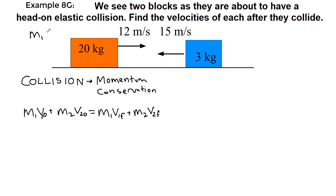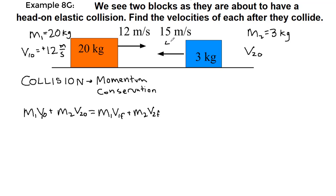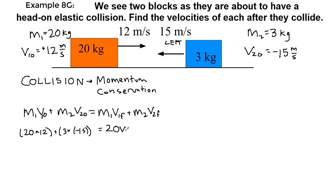If we choose mass 1 to be 20 kilograms with an initial velocity of positive 12 m/s (moving to the right, our default positive direction), and mass 2 to be 3 kilograms moving to the left at negative 15 m/s — opposite directions mean opposite signs, they cannot both have the same sign — plugging in gives: 20×12 + 3×(−15) = 20·v1_final + 3·v2_final.